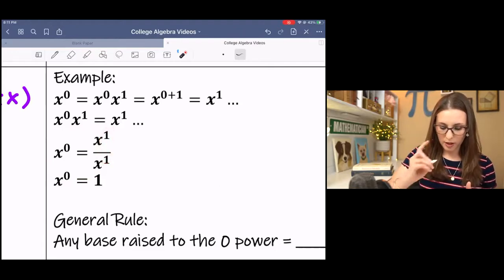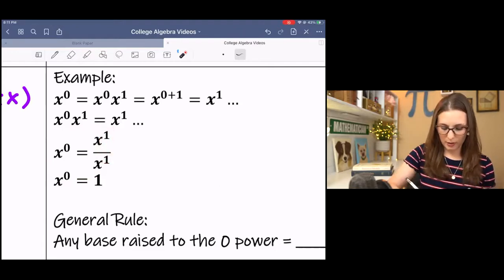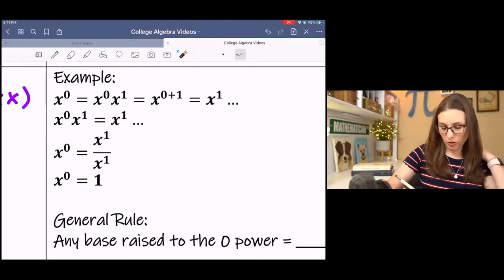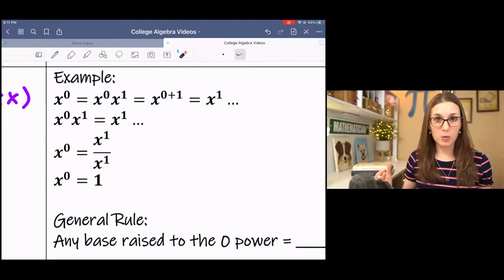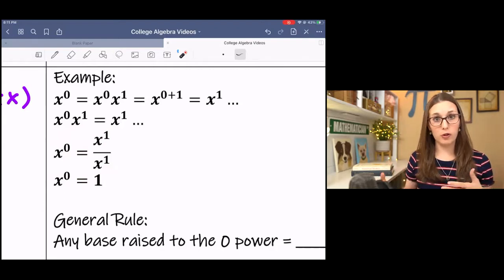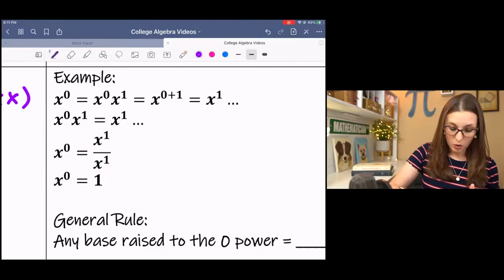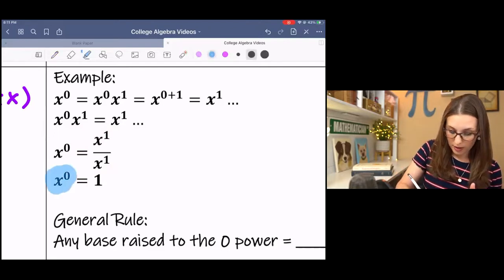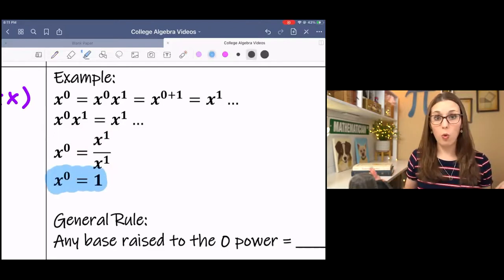I don't need to subtract because then I would end up here. What I'm wanting to do is reduce this. x to the 1st would just be a number over x to the 1st would just be a number, and it would divide to 1. So all of that means that x to the 0 is 1.